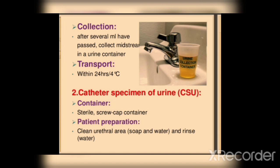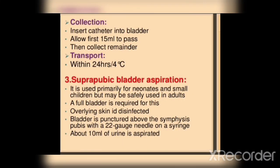Second point: catheter specimen of urine. Urine is collected in a sterile screw cap container. The patient's urethral area is cleaned with soap. Insert a catheter into the bladder. Allow the first 15 ml to pass, then collect the remainder. Transport within 24 hours; if delayed, store at 4 degrees Celsius.